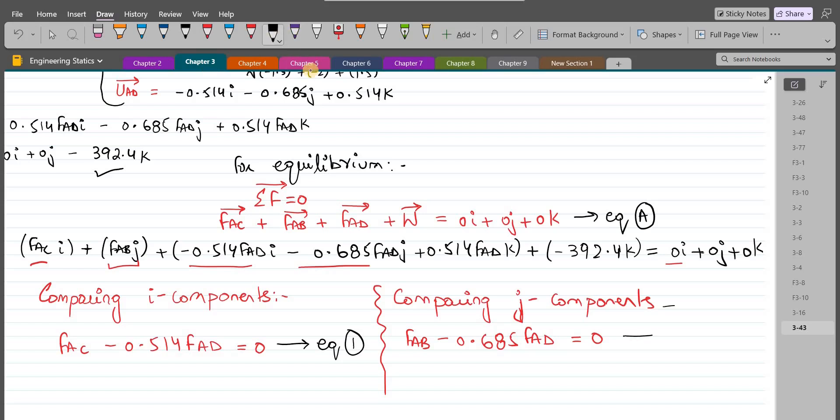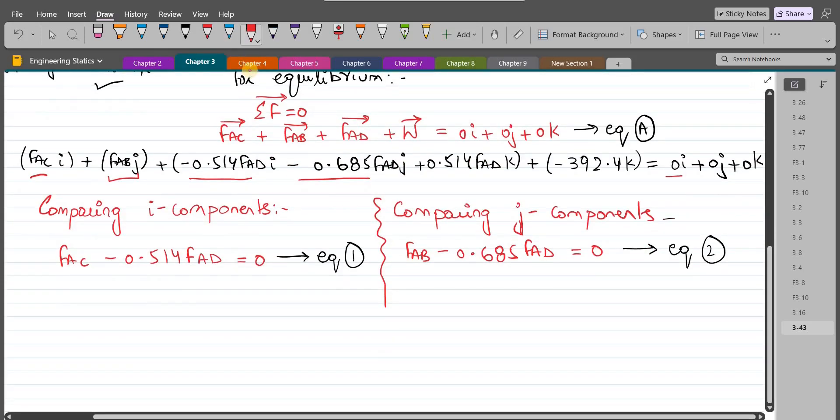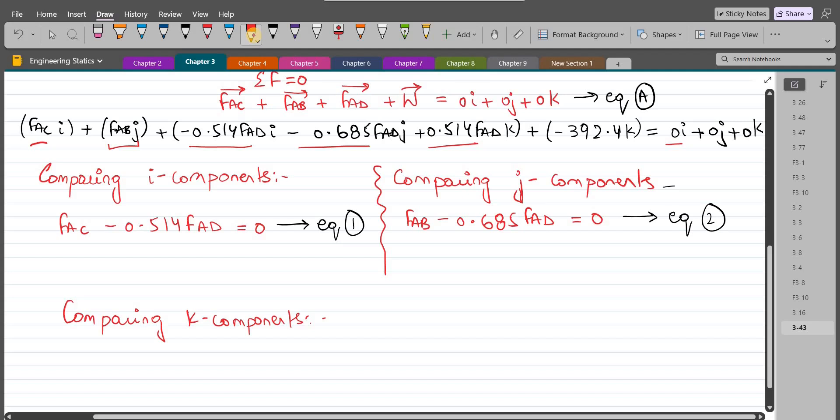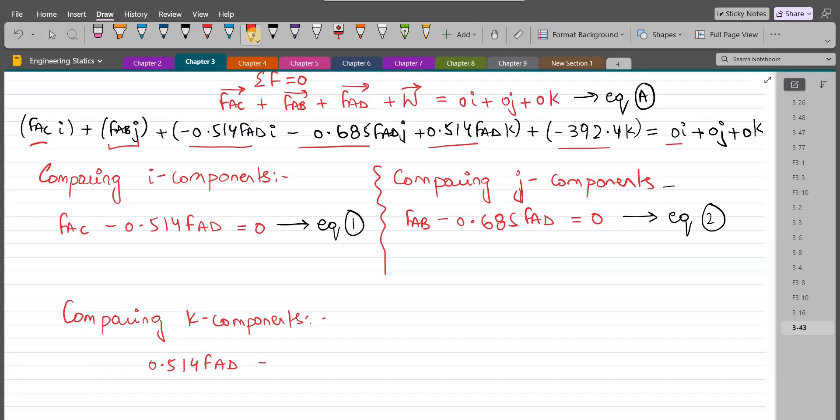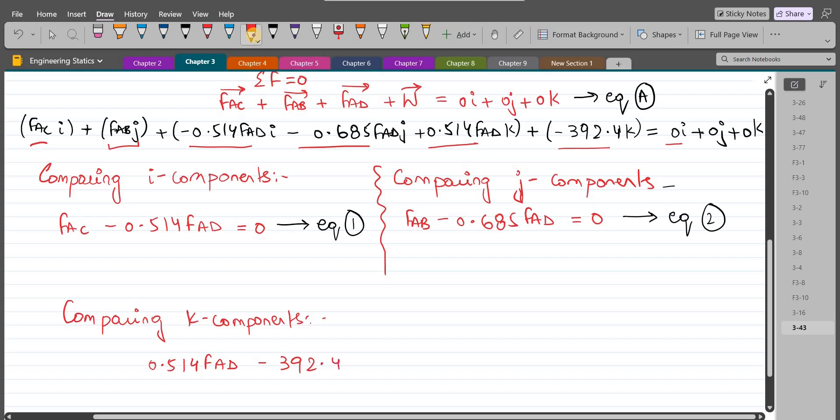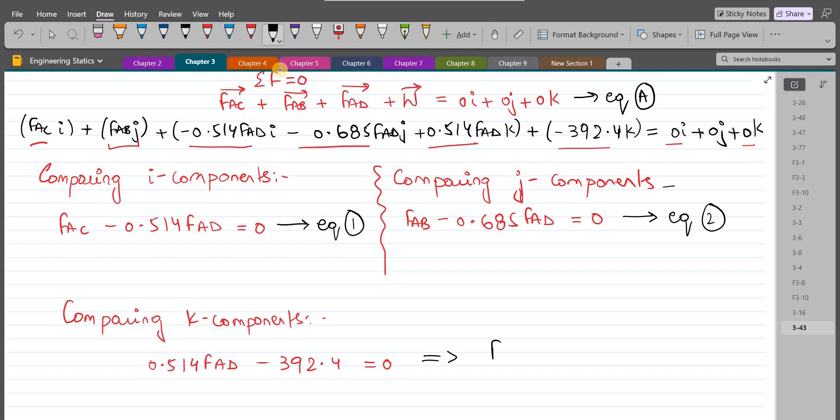let's call this equation 2. Now comparing the K components, so we have 0.514FAD minus 392.4 equals 0. So upon simplification, FAD comes out to be 763.4 Newtons, so this is our first answer.